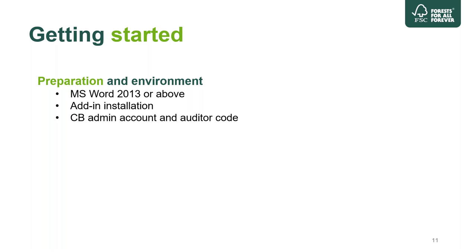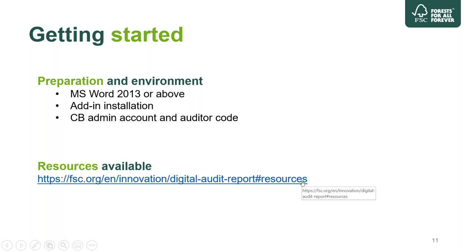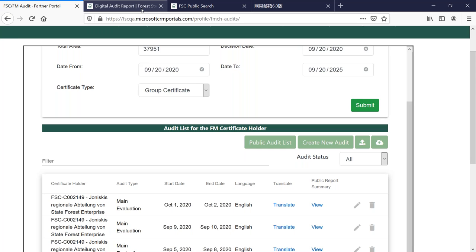Before switching to the real environment, let me explain how to get started. You need to ensure your computer has Microsoft Word 2013 or above, and you need to install a tiny portable add-in file — it is only two megabytes. You also need a CB admin account and the audit code for fetching data. The same account can log in to both the FSC certification portal and the Word add-in. You can easily find these resources by going to fsc.org and navigating to Integrity, then Digital Audit Report.